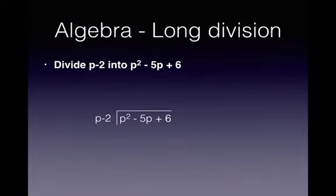Here are some long division questions to help you out. So we're asked to divide p minus 2 into p squared minus 5p plus 6. We take the leftmost term and divide the p into p squared. That gives me a p.